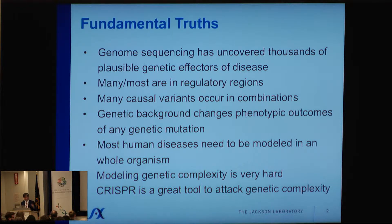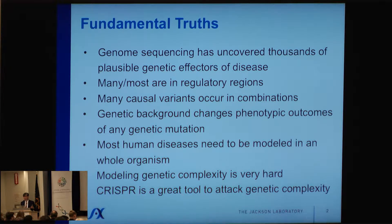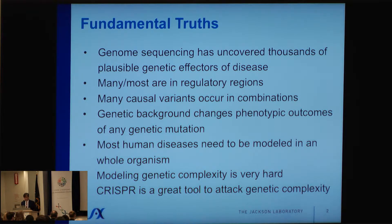Most human diseases need to be modeled in a whole organism. It's quite clear that cells are fantastic and are important, but you can't model Alzheimer's disease in a cell culture — it has to be recapitulated in an animal. Modeling genetic complexity is very hard, and every one of you in this audience knows that.